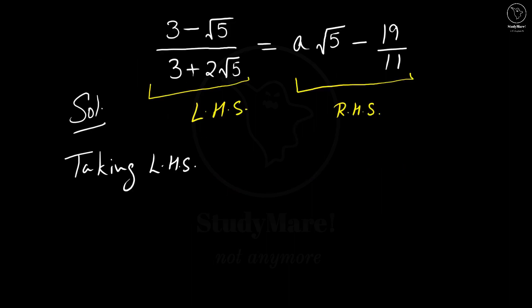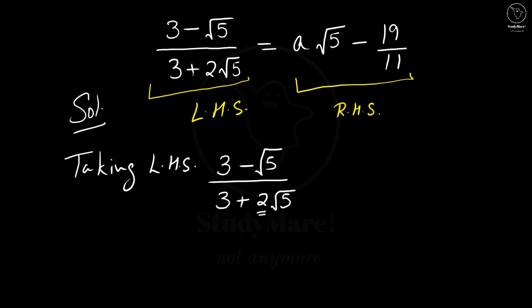Taking LHS, which is 3 minus root 5 upon 3 plus 2 root 5. A very common mistake students make in such questions — they get a little blind to the coefficient 2. They miss it and consider the denominator as 3 plus root 5. But be cautious, that is not the case. Read the question very carefully before starting to solve it.